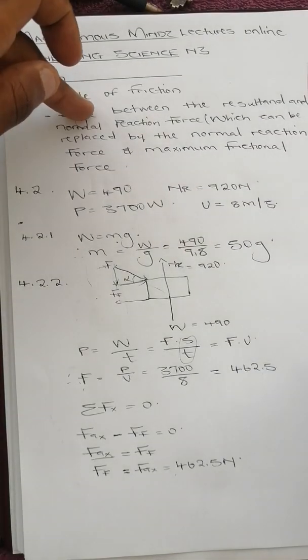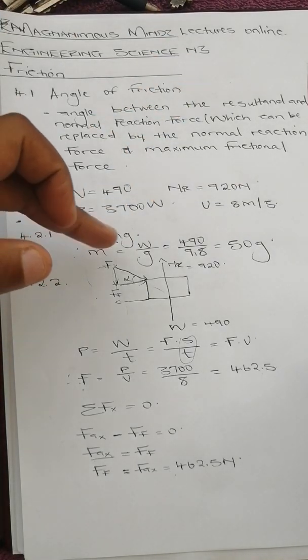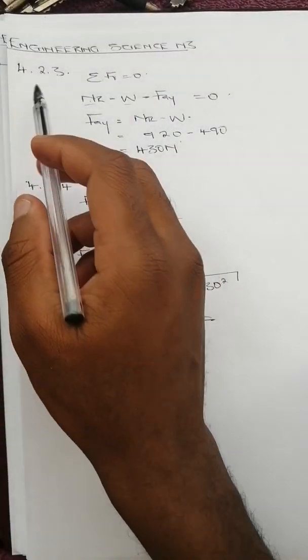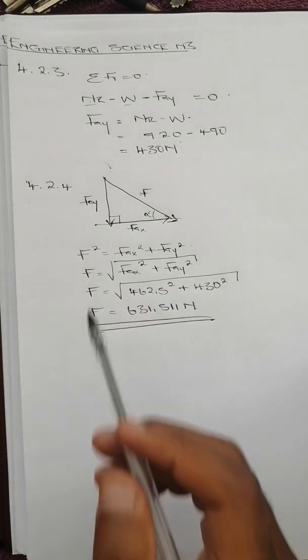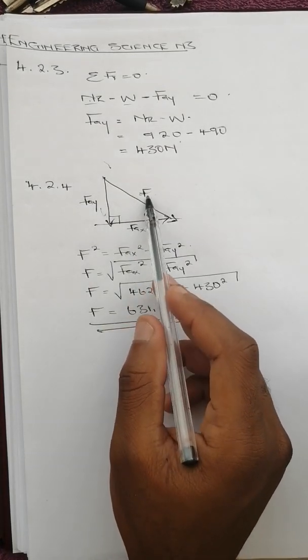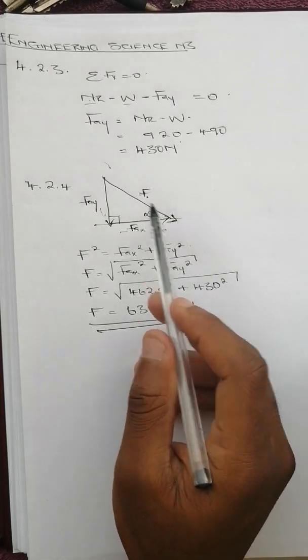To summarize: 4.1 defined the angle of friction; 4.2.1 gave mass = 50 kg; 4.2.2 gave friction force = 462.5 N; 4.2.3 gave the Y component of the applied force = 430 N; and 4.2.4 gave the resultant force F = 631.5 N. Thanks for watching Magnanimous Minds Lectures Online. Please subscribe, like our videos, and follow us on Facebook, Instagram, and Twitter at Magnanimous Minds.